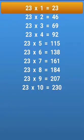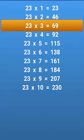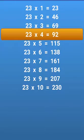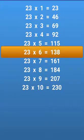23 times 1 equals 23, 23 times 2 equals 46, 23 times 3 equals 69, 23 times 4 equals 92, 23 times 5 equals 115, 23 times 6 equals 138.